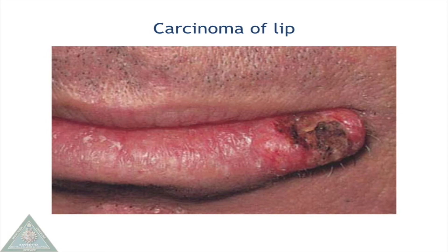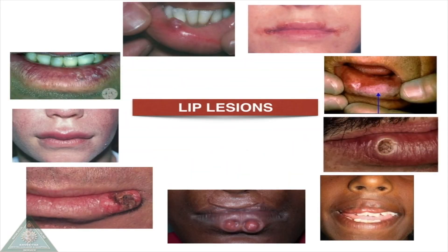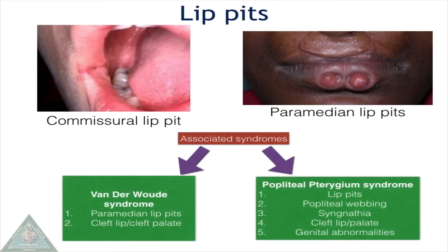Carcinoma of the lip appears as an ulceroproliferative lesion which is indurated. Lip pits are mucosal invaginations found in the lips. There are two types: commissural lip pits, found in the commissures, and paramedian lip pits, often found in the lower lip.